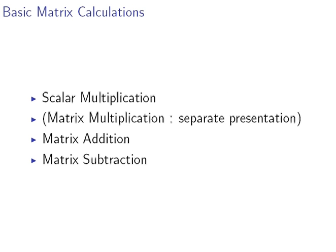Here's a list of them. The first thing we're going to deal with is scalar multiplication, which is a very simple type of multiplication. There's another type called matrix multiplication, and we're going to deal with that in a separate presentation because it's much more complex. We're also going to look at matrix addition and subtraction.